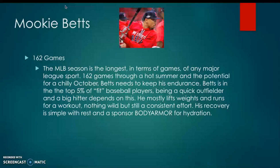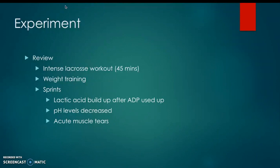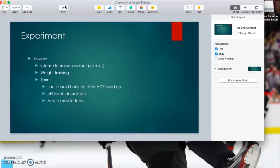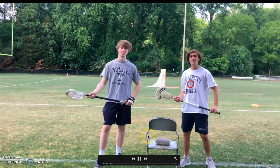Our experiment involves an intense lacrosse workout — shooting in the hot sun for about 45 minutes, which involves a lot of muscles. Then we head to the gym for weight training and sprints. The chemistry behind it is that lactic acid will build up in our muscles after the ADP has been used up, our pH levels will decrease, and there will be some acute muscle tears from the training. We're shooting a thousand lacrosse balls and our muscles are going to get pretty fatigued — we'll check back in when we're done.